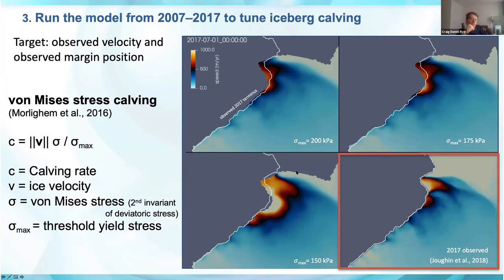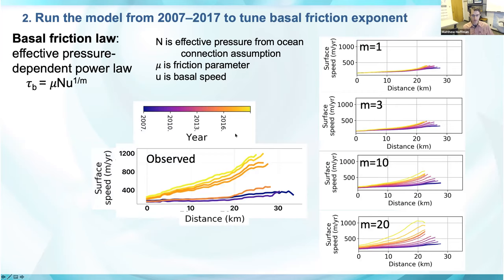A question from the chat asks if the friction parameter mu can vary with time. For this analysis, we've assumed it cannot. A separate thread of work uses the subglacial hydrology model to inform basal friction, but allowing mu to vary while also resolving the exponent simultaneously would involve too many unknowns. It's certainly possible that mu could vary in time.